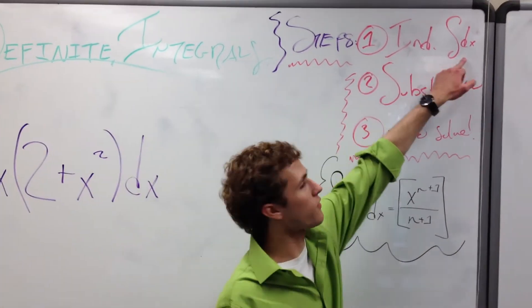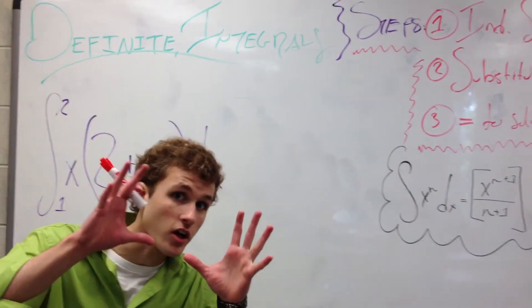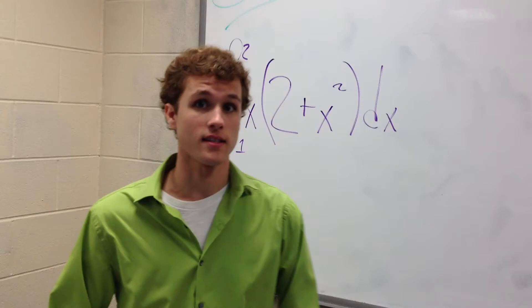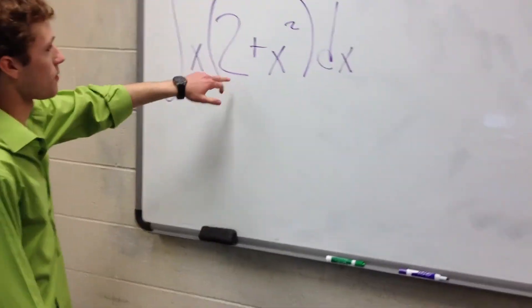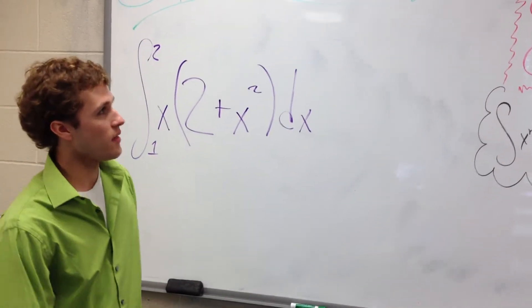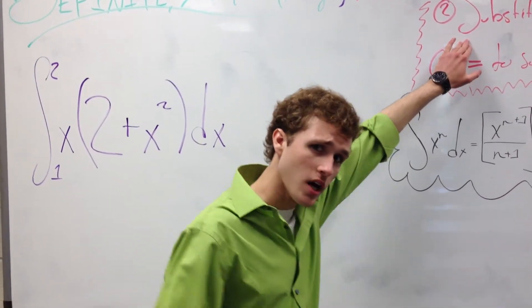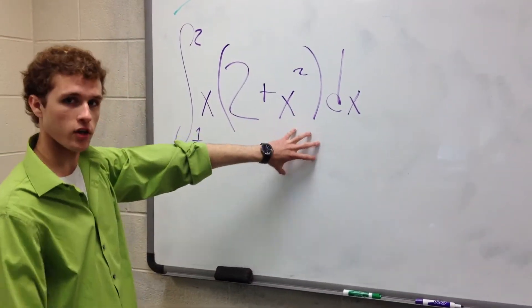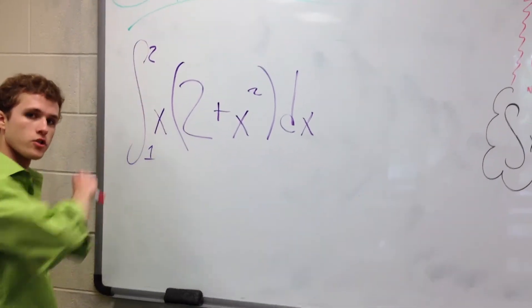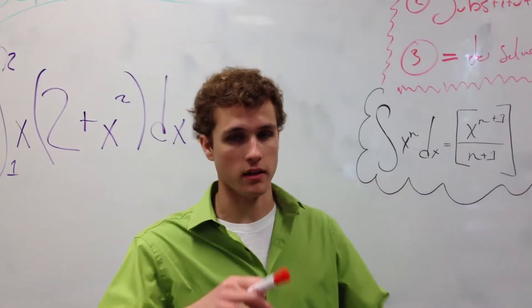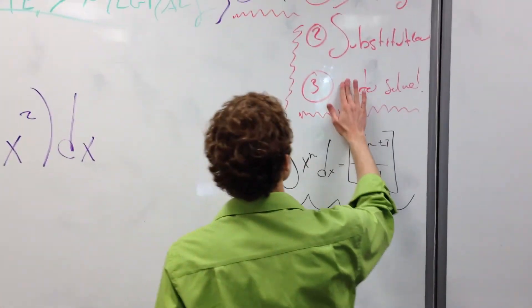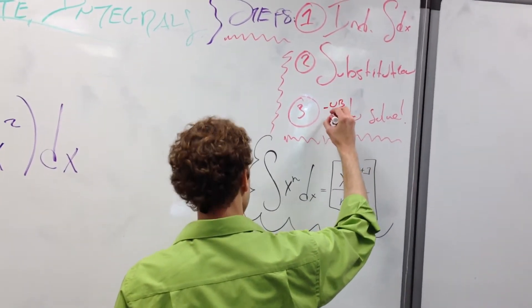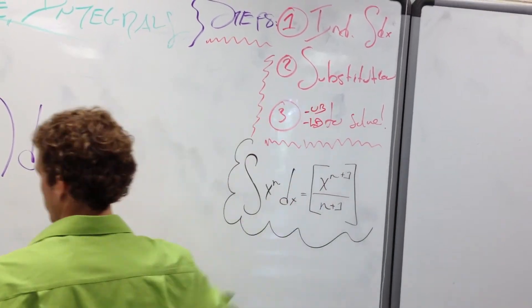First here, we need to find the indefinite integral, so we need to get the function that this is going to provide us with, or basically all this is saying is we need to get the antiderivative of x times 2 plus x squared. And then, sorry, we're going to substitute the values that we have up here in our interval. So we're going to get that function, then we're going to plug in 1, we're going to plug in 2, and then we're going to do the third step. We're going to subtract them to solve. We're going to subtract upper bound from the lower bound to solve these.